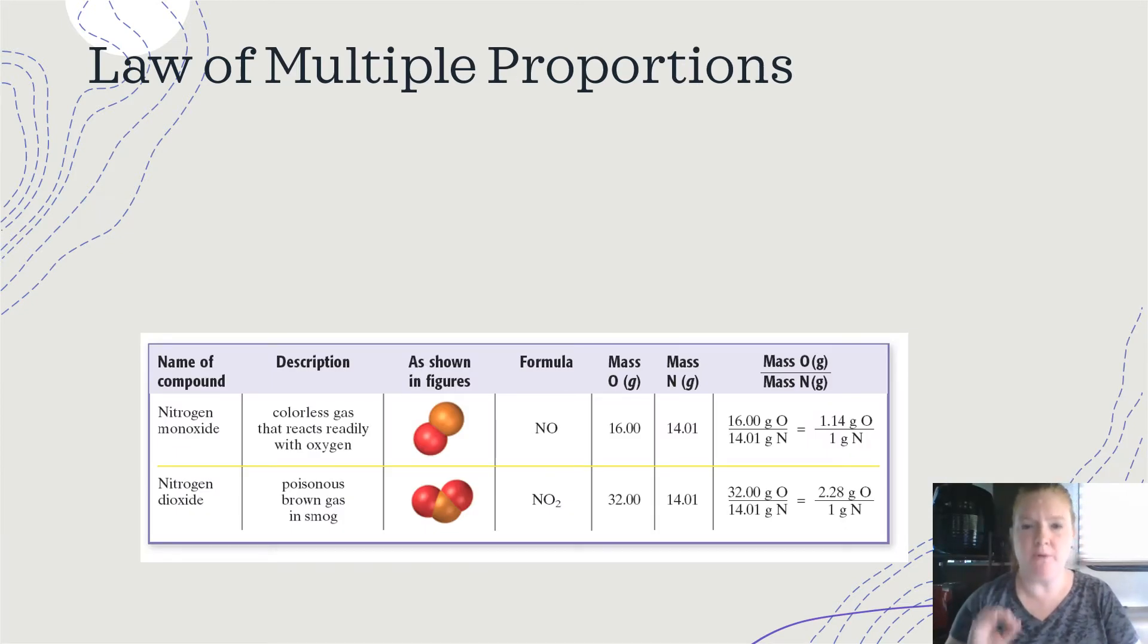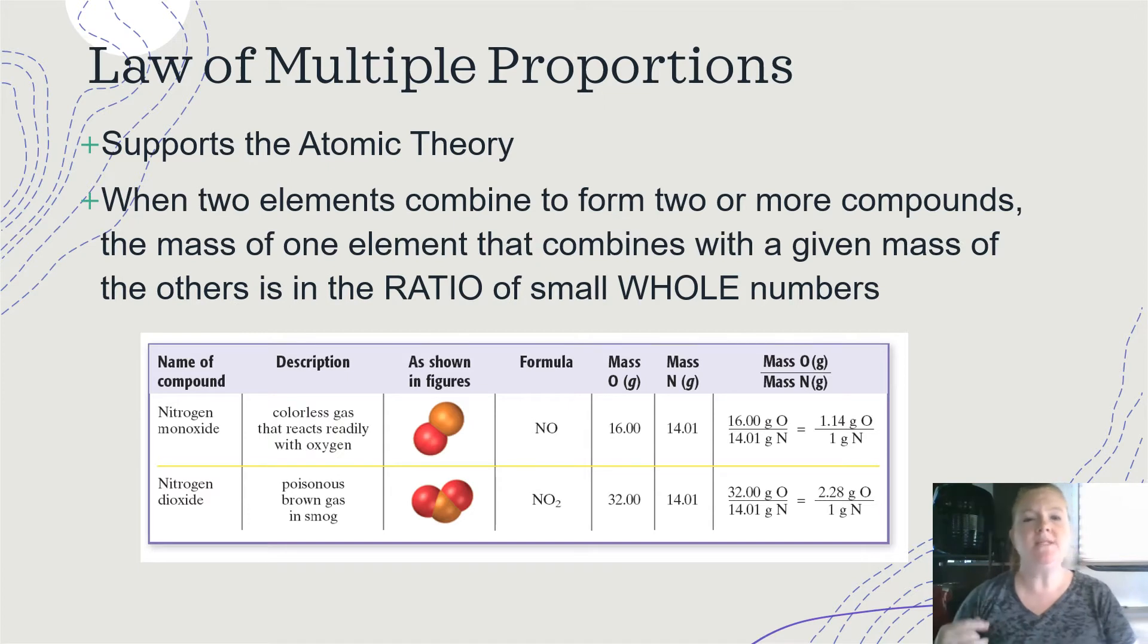Now the law of multiple proportions. So we had definite proportions before, but now multiple proportions. It still supports the atomic theory, but what it says is when two elements combine to form two or more compounds. So you can see this example. We have nitrogen monoxide and nitrogen dioxide. So it's nitrogen and oxygen, but two different compounds. The mass of one element that combines with a given mass of another element, it's in the ratio of whole numbers. So nitrogen monoxide is one nitrogen to one oxygen. Nitrogen dioxide is one nitrogen to two oxygen. It's not in halves. Okay, it's not in three quarters. It's not in some weird decimal. Atoms combine in whole number ratios. Okay, so hydrogen peroxide is H2O2, but water is H2O. They both contain hydrogen and oxygen, just in different proportions, hence multiple proportions.